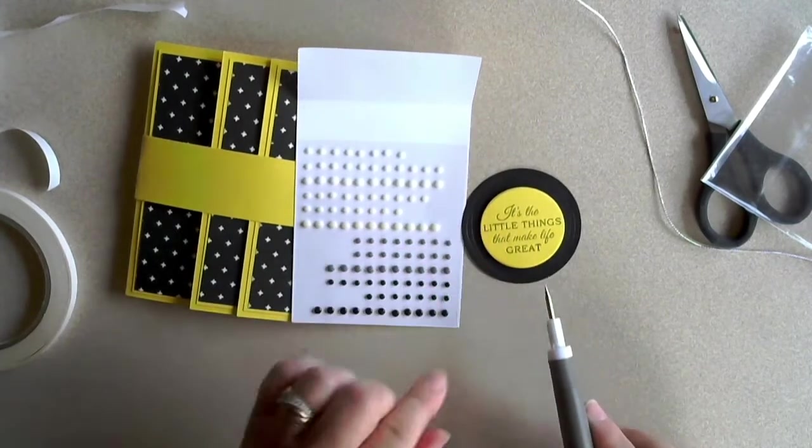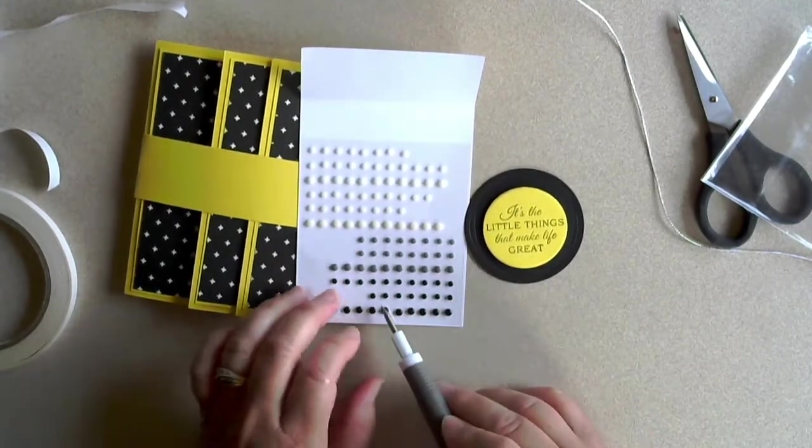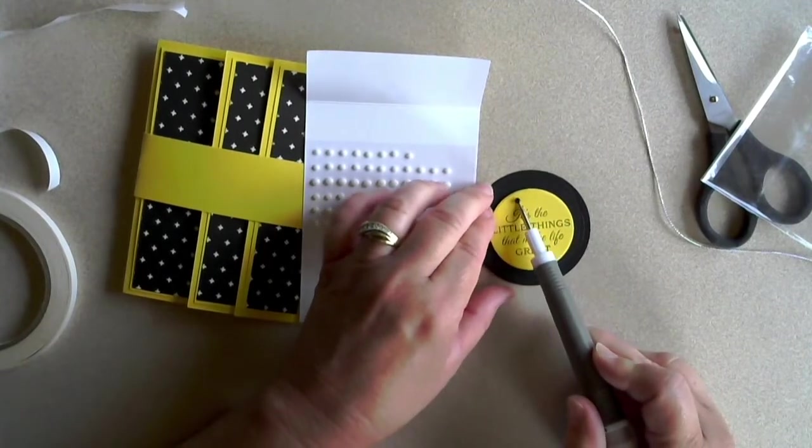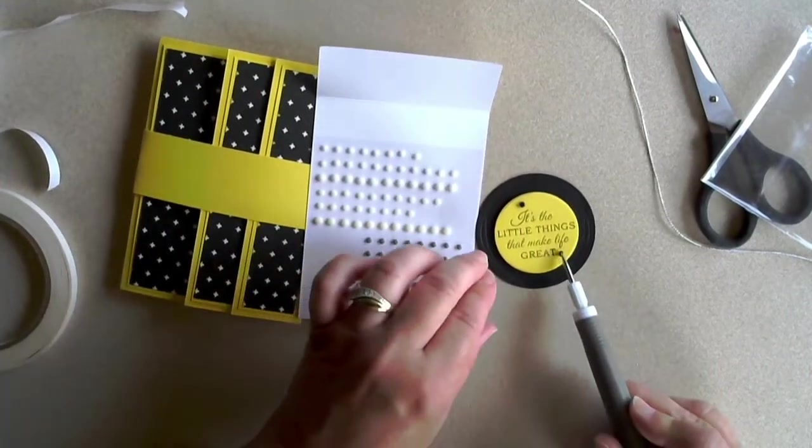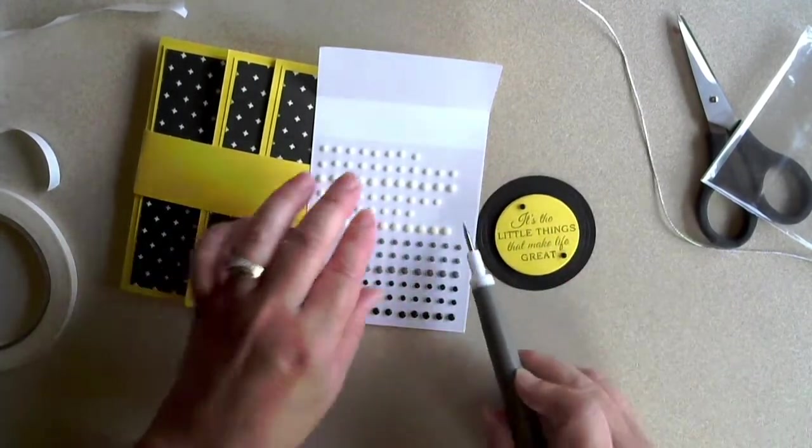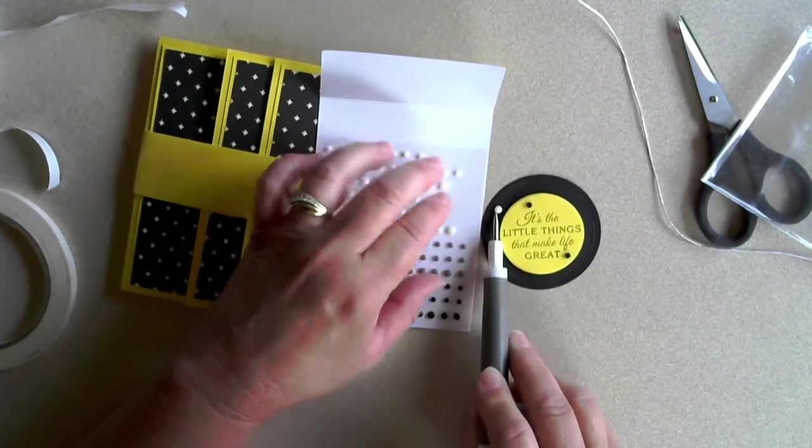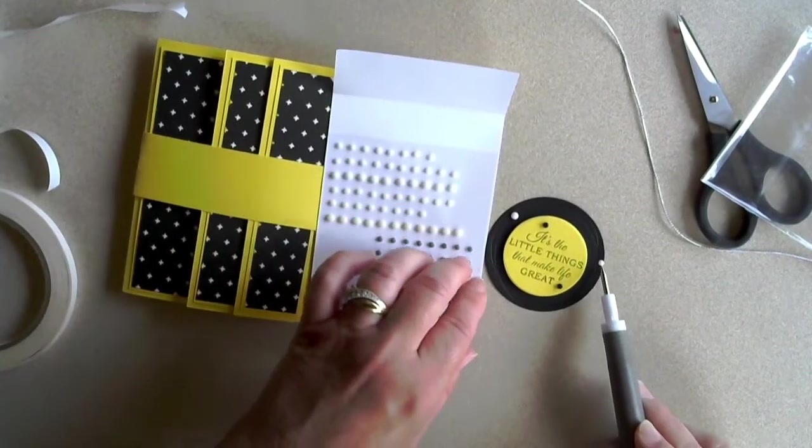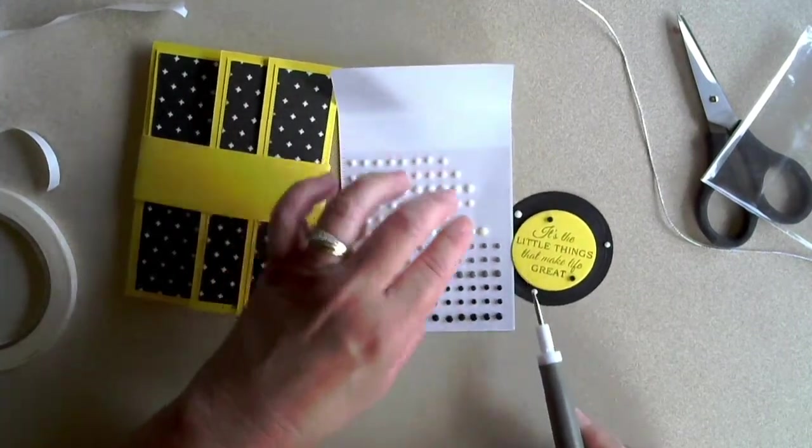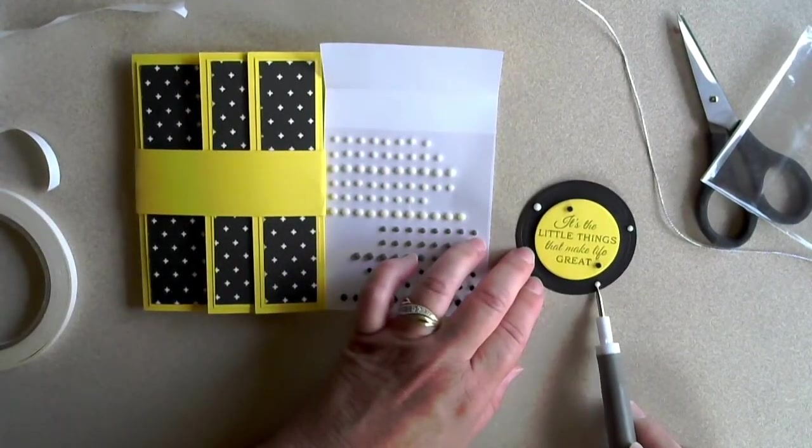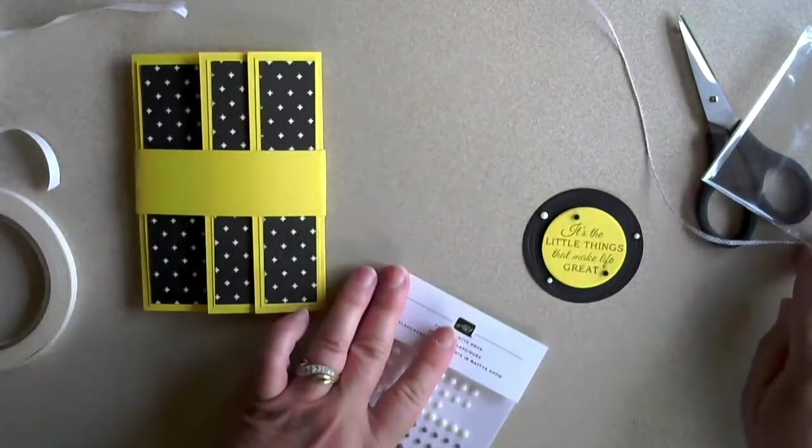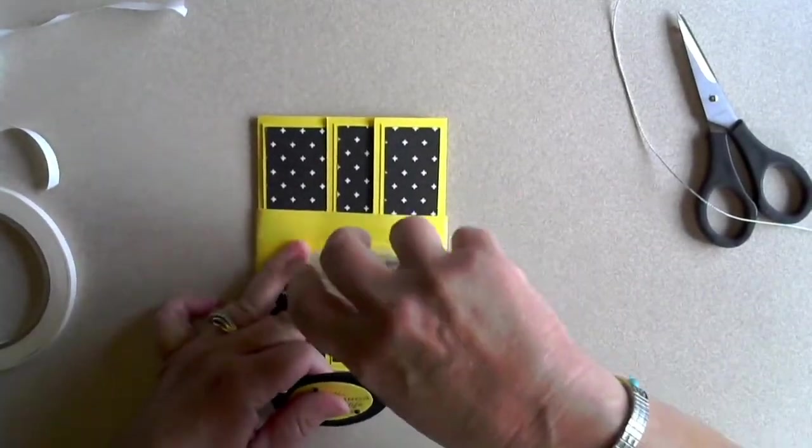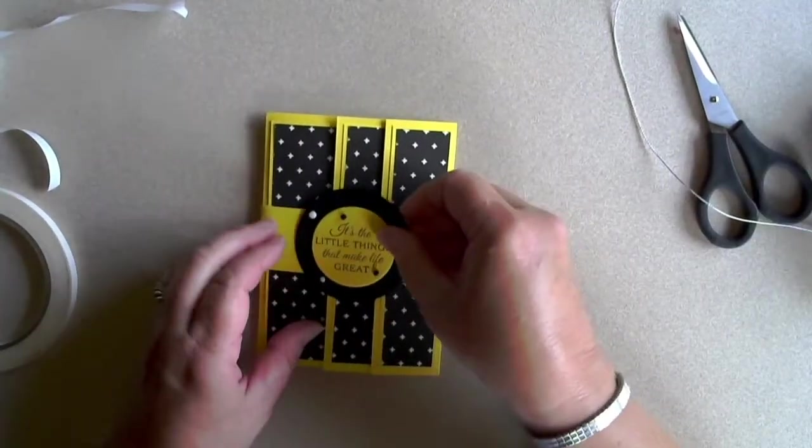Now, should we put white ones around the outside or some black ones on the greeting itself? Maybe both. It's kind of fun. And then we will just add a little adhesive to our belly band and pop this on here.